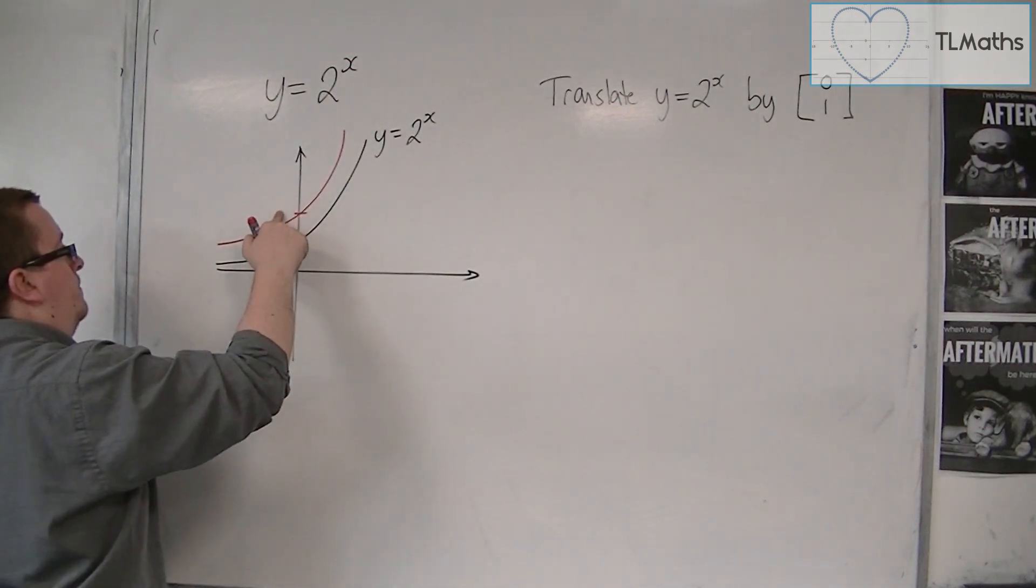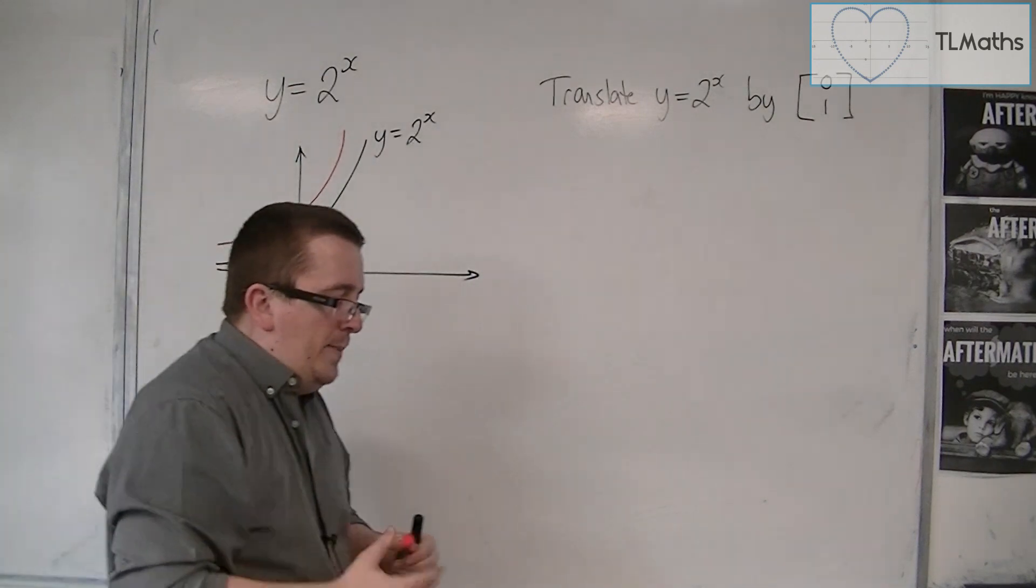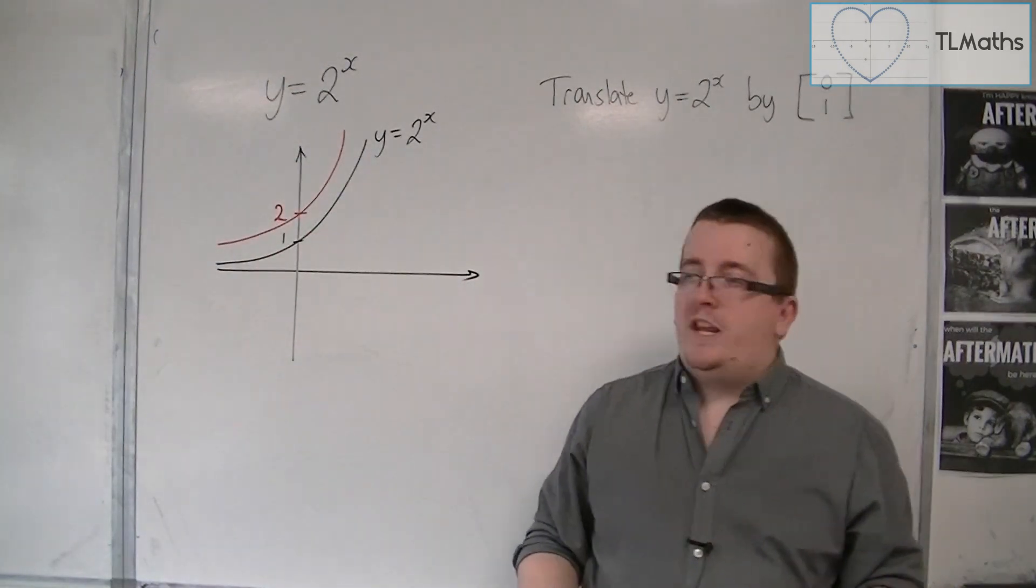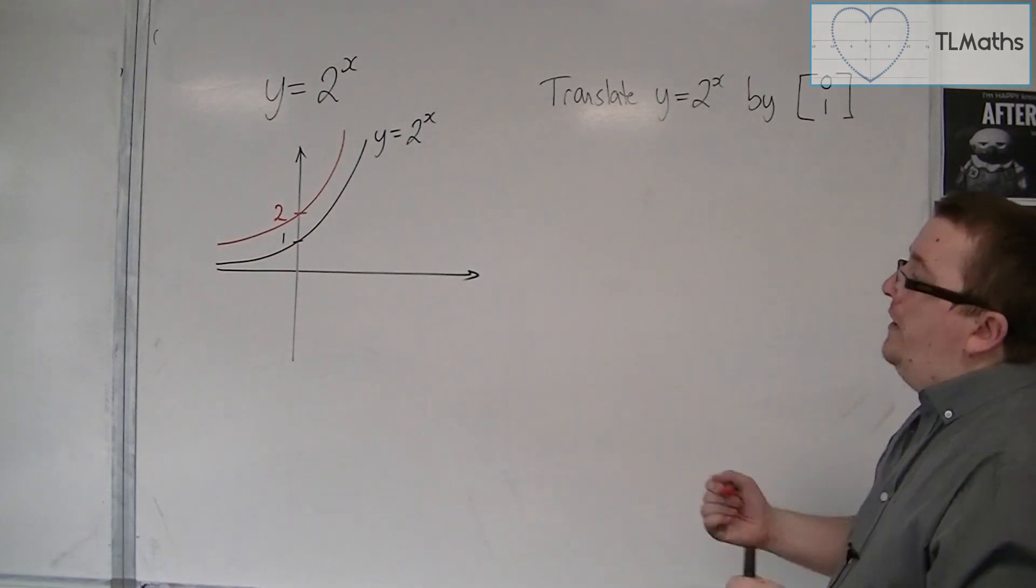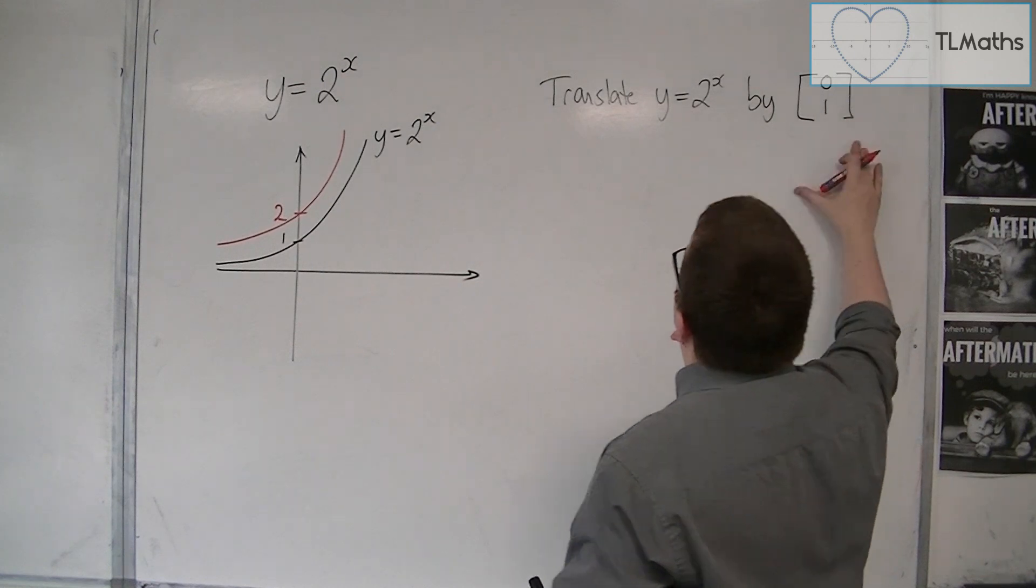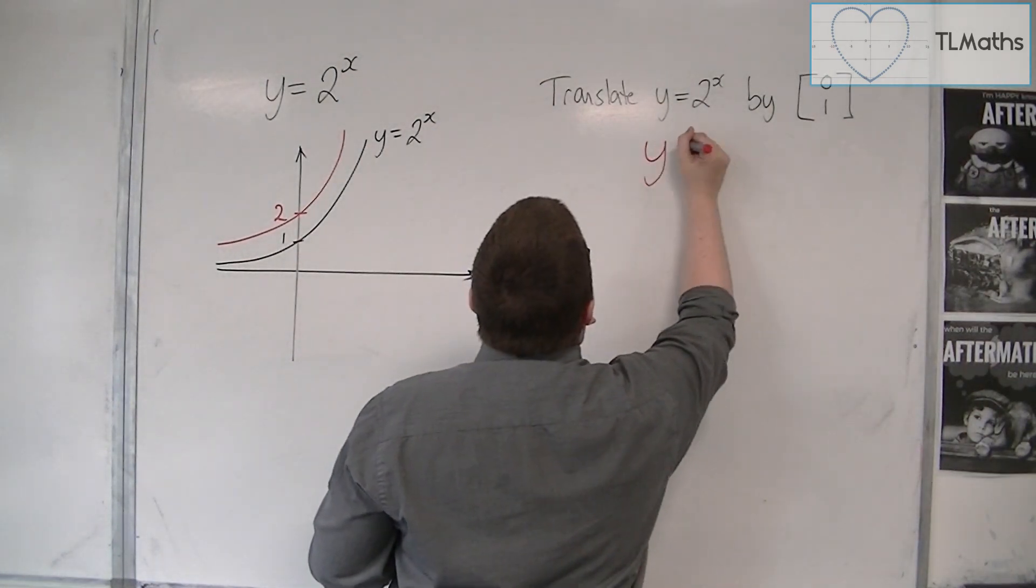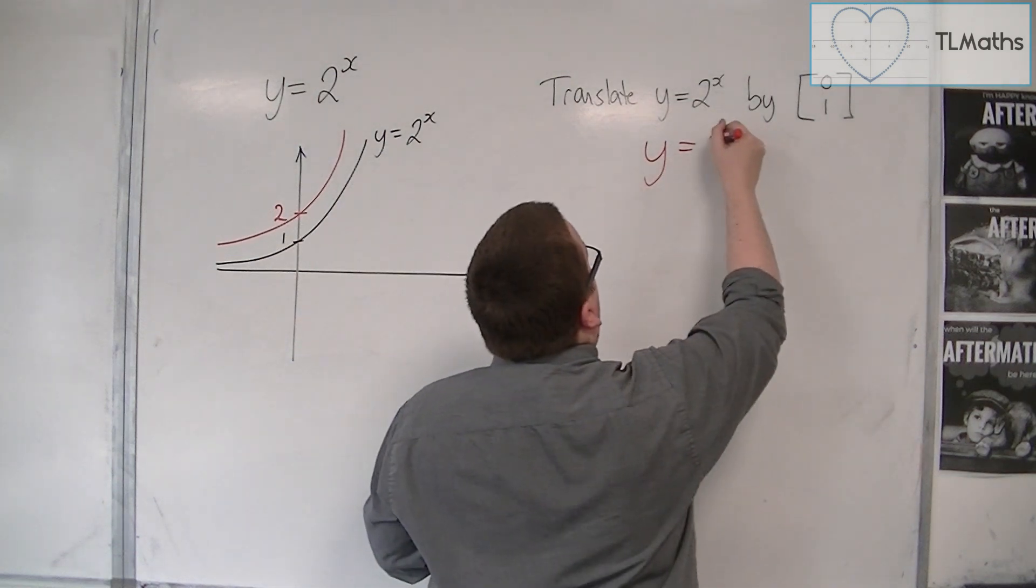So, also, now going through 2 on the y-axis. Now, we want to be able to write down what that equation is, the equation of this new curve. So, if I translate y equals 2 to the x by 0, 1, what's happened is that all the y values are now one more than they previously were. So previously, they were 2 to the x. But because they're now one more, it's 2 to the x plus 1.